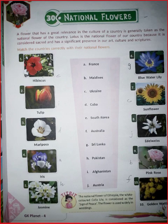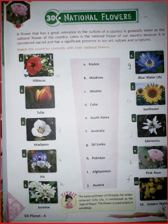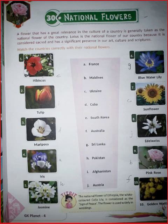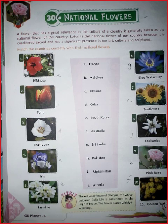Mariposa is the national flower of Cuba. What is the national flower of Cuba? Mariposa. Iris is the national flower of France. Jasmine is the national flower of Pakistan. What is the national flower of Pakistan? Jasmine. Blue water lily — what is the national flower of Sri Lanka? The national flower of Sri Lanka is blue water lily.